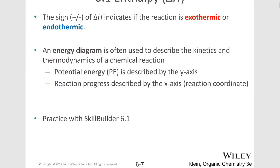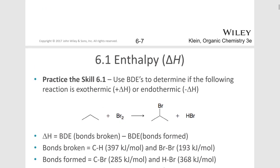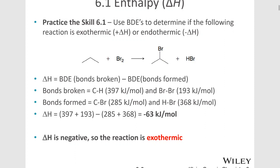The sign — plus or minus — on delta H indicates whether the reaction is endothermic or exothermic. The energy diagram is often used to describe the kinetics and thermodynamics of a chemical reaction, with energy on the y-axis and reaction progress on the x-axis. We can do these calculations to determine if the reaction is exothermic or endothermic. Delta H is given by the bond dissociation energy for the bonds broken minus the bonds formed. So what bonds are we breaking in this reaction? We're breaking a carbon-hydrogen bond and a bromine-bromine bond.